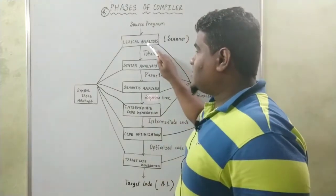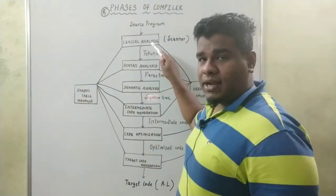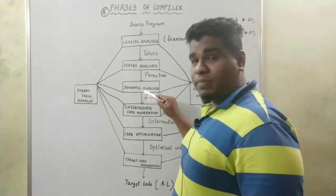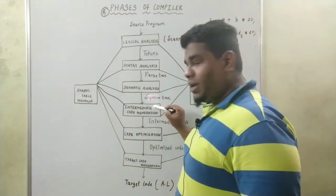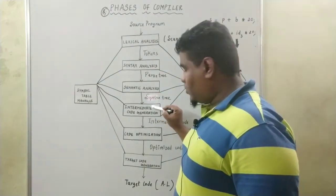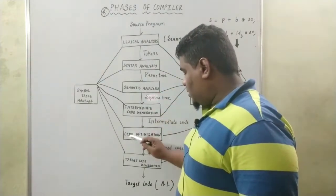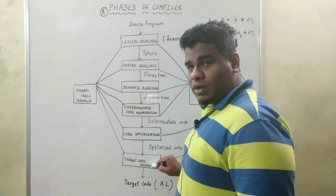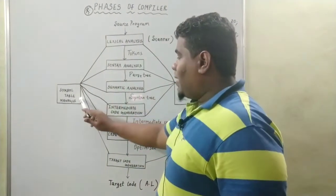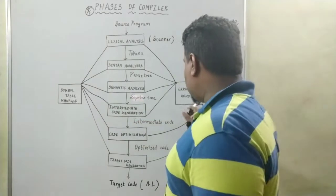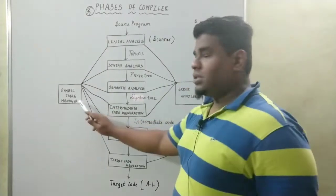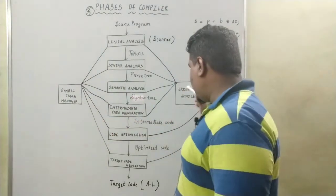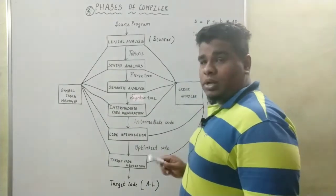The first phase is lexical analysis, followed by syntax analysis, followed by semantic analysis, then intermediate code generation, code optimization, and target code generation. We also have two different handlers in the manager: the symbol table manager and the error handler.